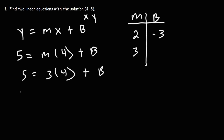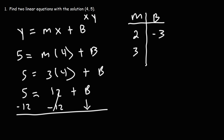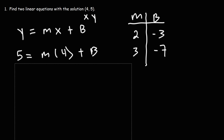3 times 4 is 12, and if we subtract both sides by 12, we get that b is 5 minus 12, which is negative 7. You could continue the pattern — you can make m equal to 4, 5, 6; there are so many different variations, but we'll stick with these two.